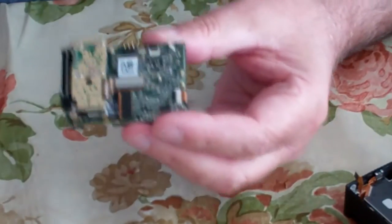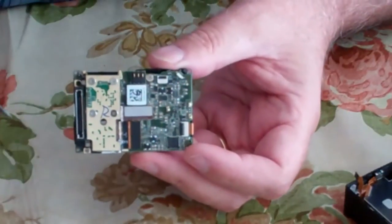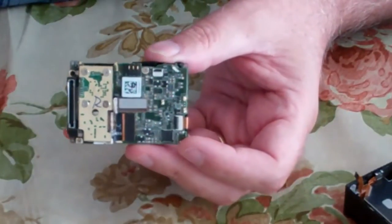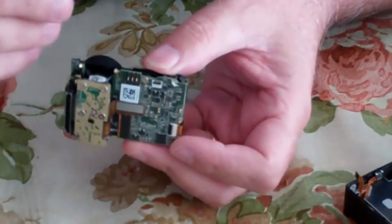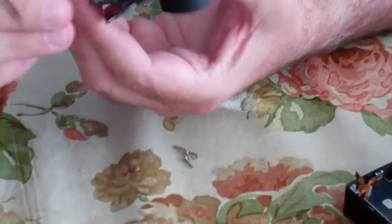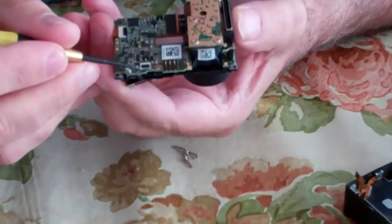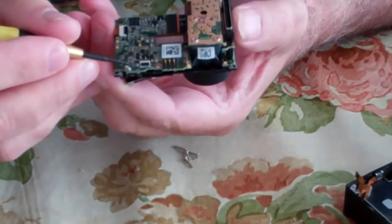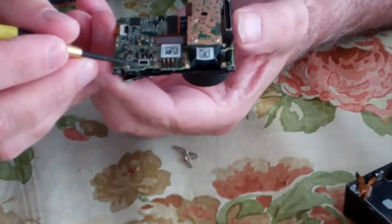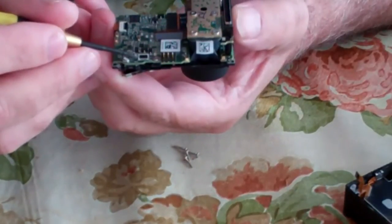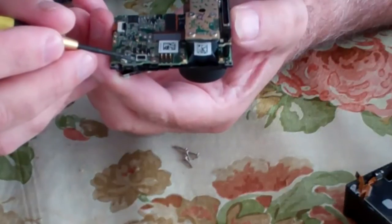Now, to wire the record switch, starting from this side, pin one is the record switch, pin three is the ground. We need to run two wires from the record switch pin to the ground.